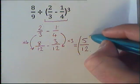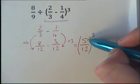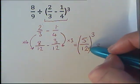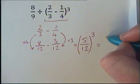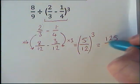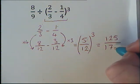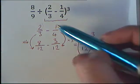Then we just need to cube the top number and cube the bottom number. So 5 times 5 times 5 is 125, all over 12 times 12 times 12 which will give you 1,728.